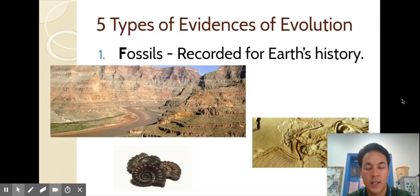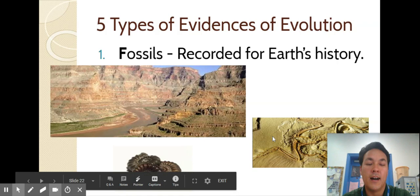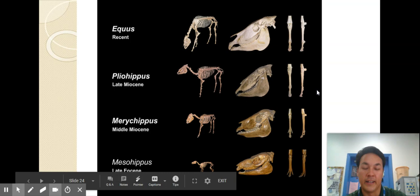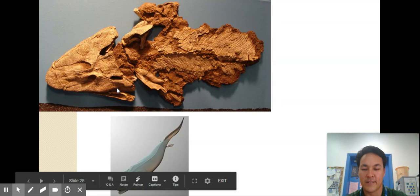And so here are some types of evidence of evolution we've seen fossils and so I showed you in class Archaeopteryx showing the evolution of birds from dinosaurs and Tiktaalik the evolution of land animals from fish. There's Archaeopteryx here's just an example of horse evolution over time and here's our friend Tiktaalik from Neil Shubin.